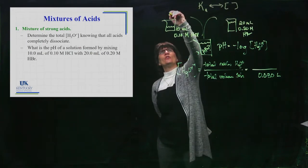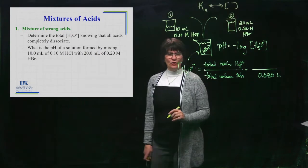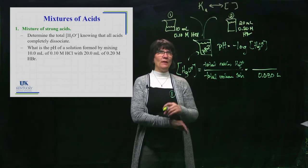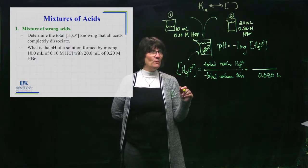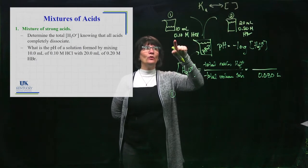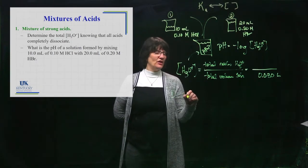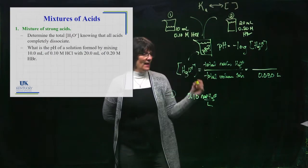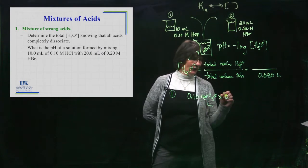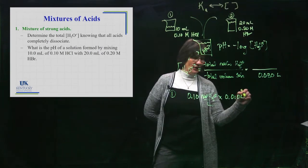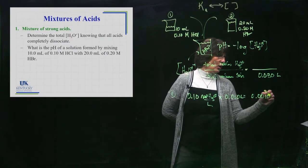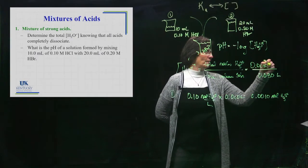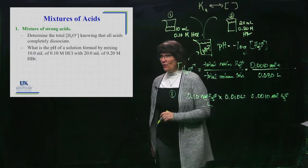I need to get the total moles. Let's call this solution one and this solution two. In solution one, we can get the moles of H3O plus. The molarity of HCl is the molarity of H plus, so I have 0.10 moles of H3O plus per liter. If I multiply by the volume, 0.010 liters, that's going to give me 0.0010 moles of H3O plus that were in this first beaker.